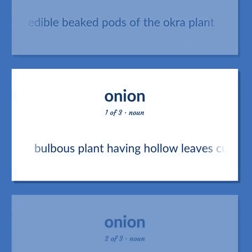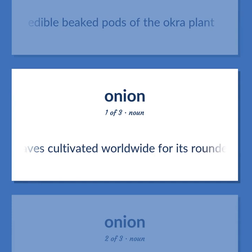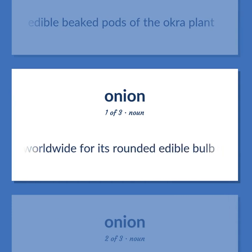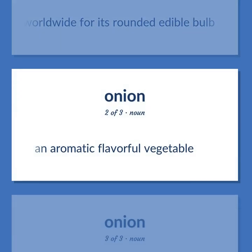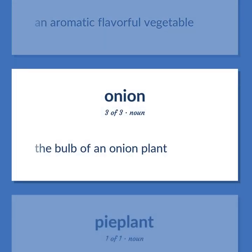Onion: A bulbous plant having hollow leaves, cultivated worldwide for its rounded edible bulb. An aromatic, flavorful vegetable. The bulb of an onion plant.